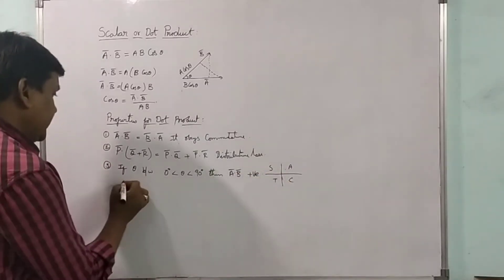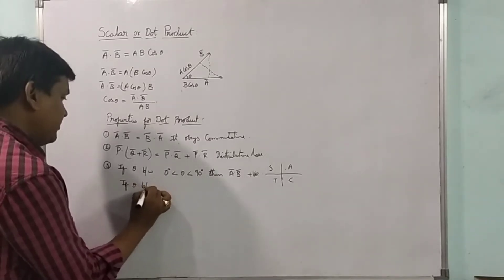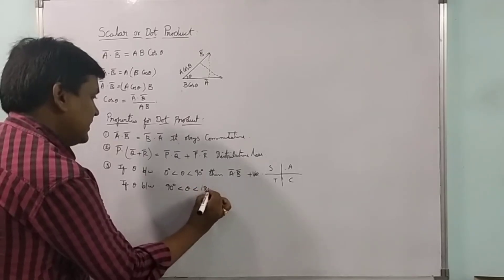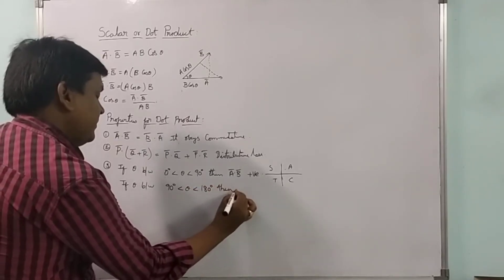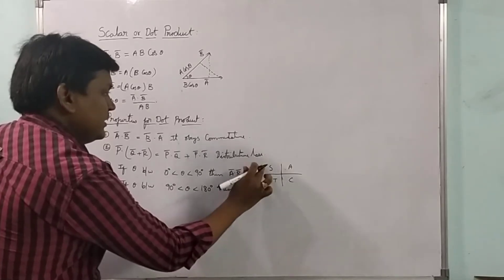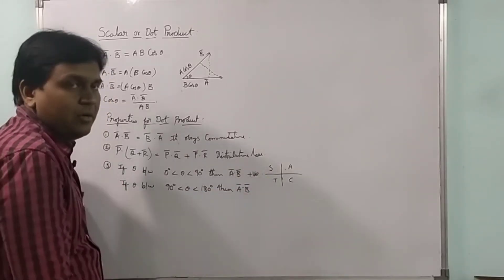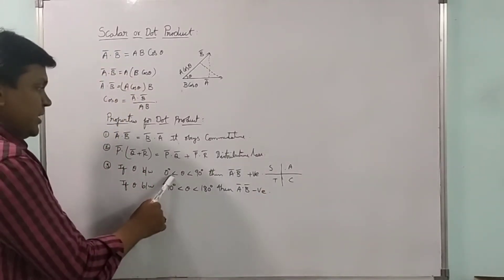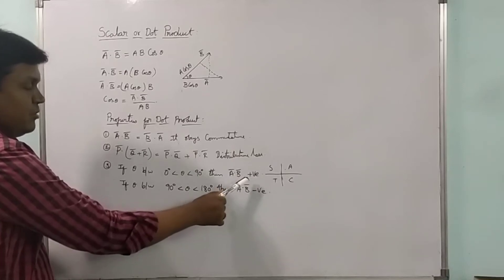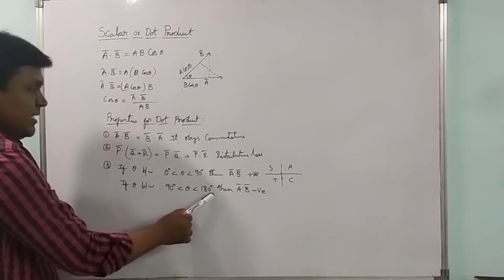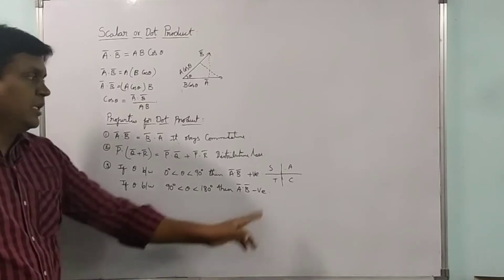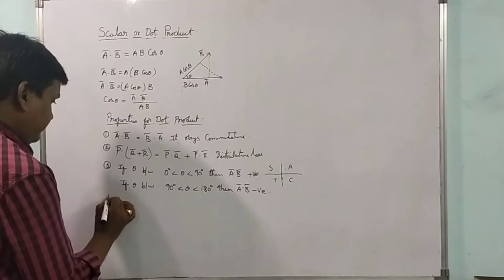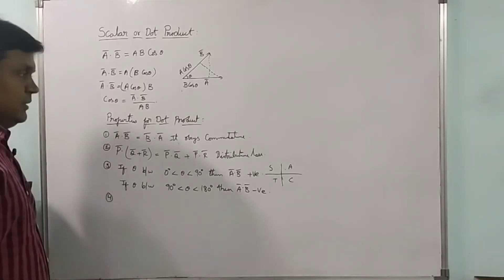If theta is between 90 and 180 degrees, it falls in the second quadrant where cosine is negative, so a-bar dot b-bar will be negative. So if the angle is between 0 and 90, a-bar dot b-bar is positive; if it is between 90 and 180, it will be negative. In the third and fourth quadrants it will also be negative.